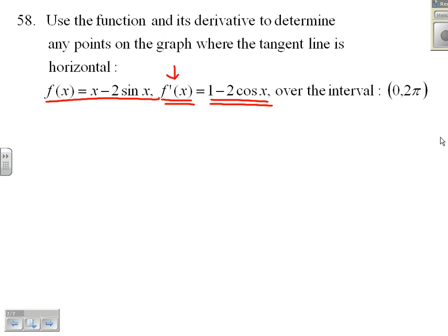to find any points on the graph where the tangent line is horizontal. But horizontal tangent lines occur where slopes are zero. So this is just code for we want slope to equal zero.